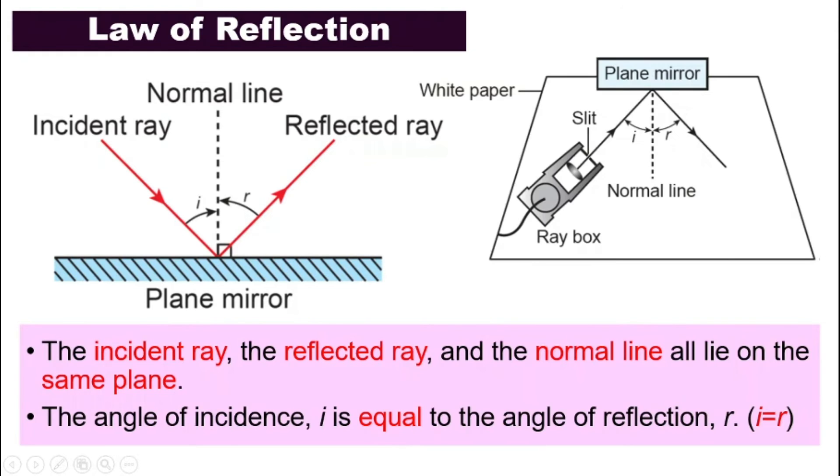So your science teacher might allow you to do this activity or experiment in your science lab, where we will use the plane mirror, white paper, we will use our ray box as our incident ray. And then we will measure i and r, and you will find out for yourself if i is really equals to r all the time.